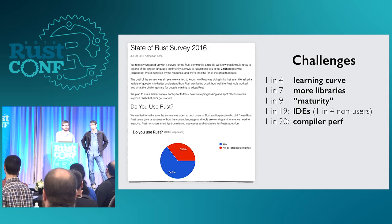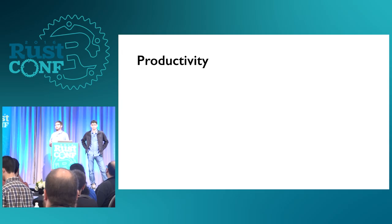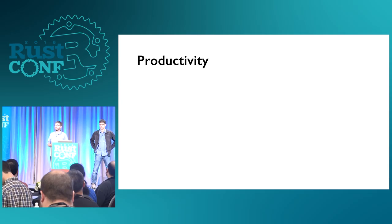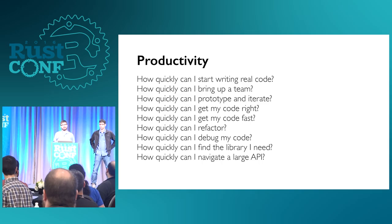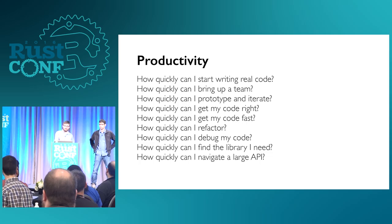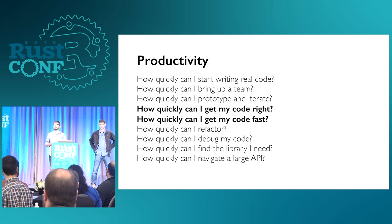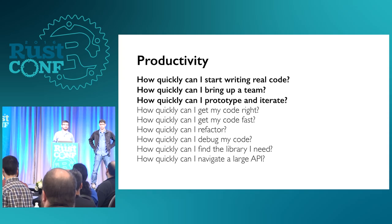From the survey and conversations, the common theme is that productivity is key. There are lots of different ways to look at productivity, but the biggest obstacle to Rust today is its productivity. There are aspects Rust gets really right: if you need to write reliable code or fast code, Rust is a great choice. But things like 'Rust is a fast way to get up to speed' or 'Rust is a great language for prototyping' — those don't feel true today.